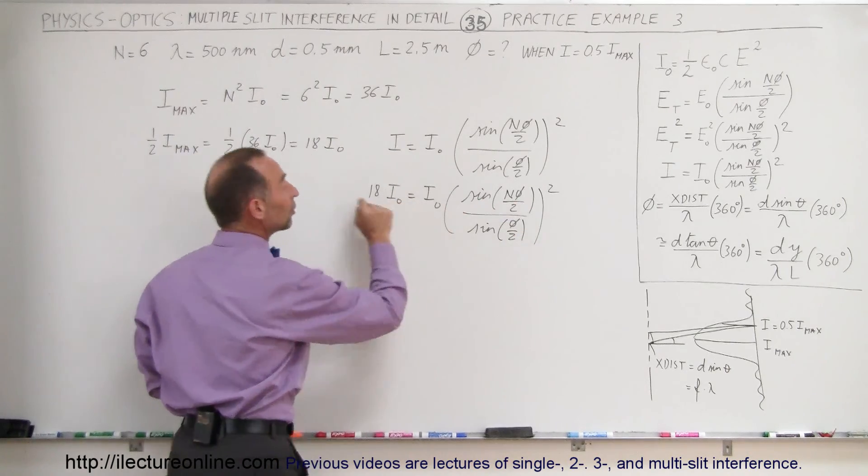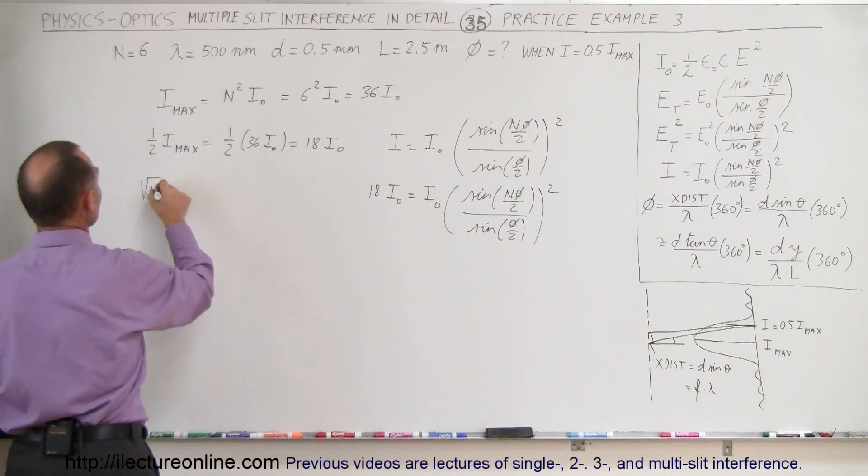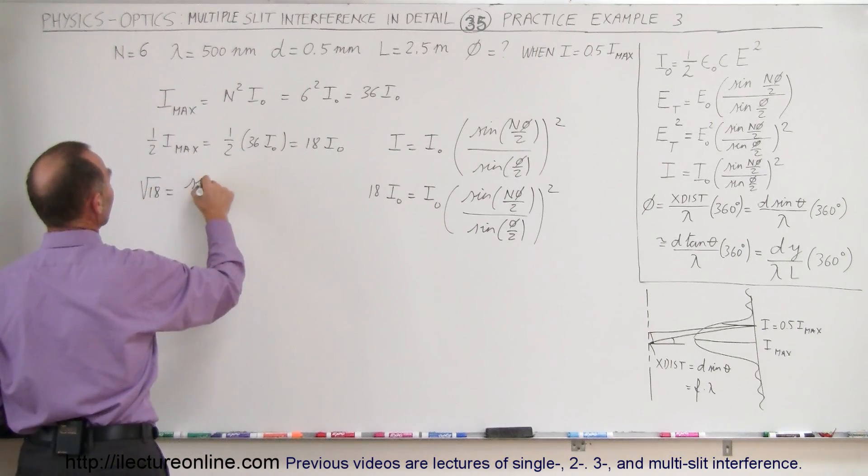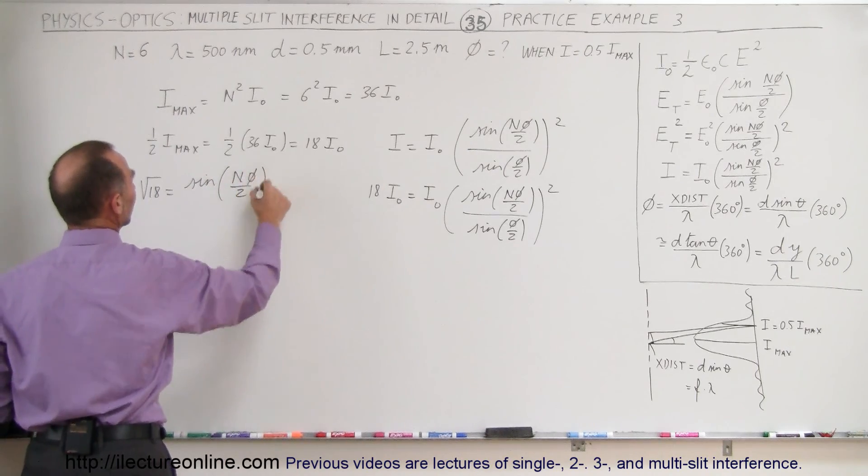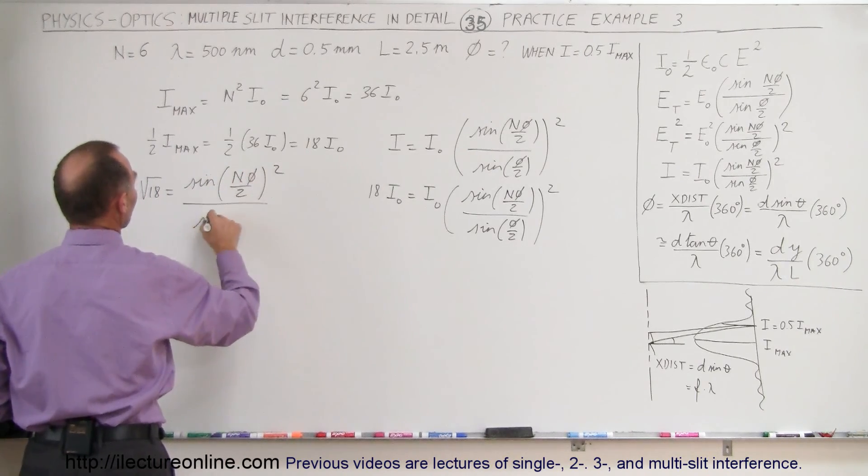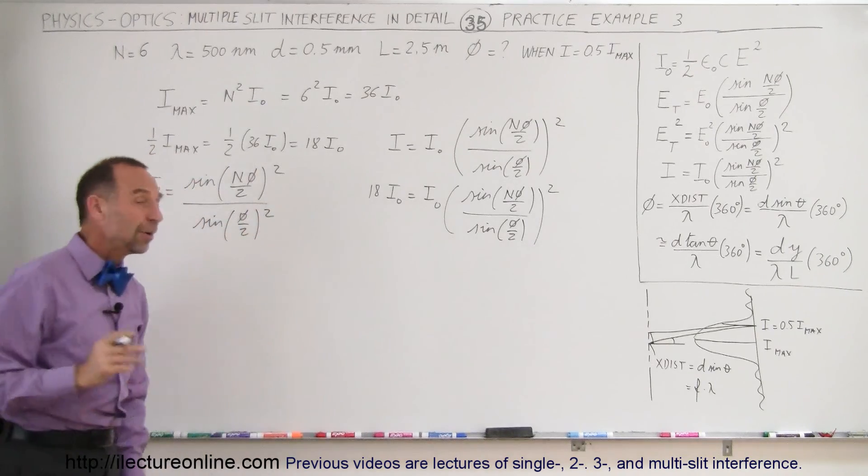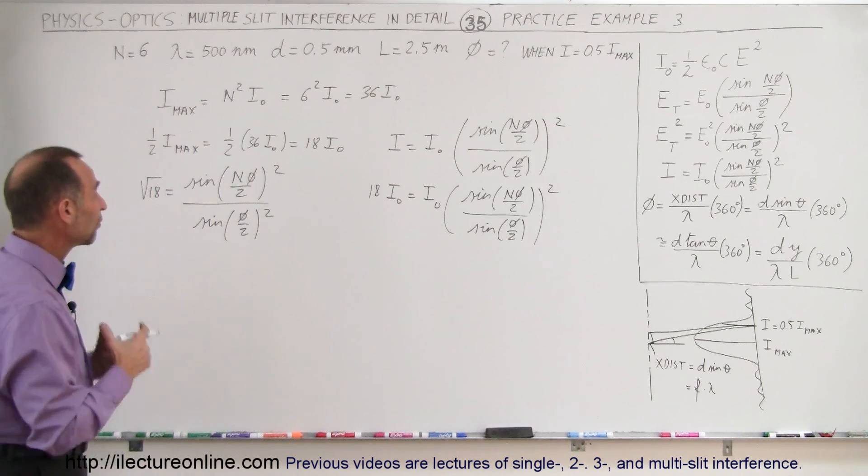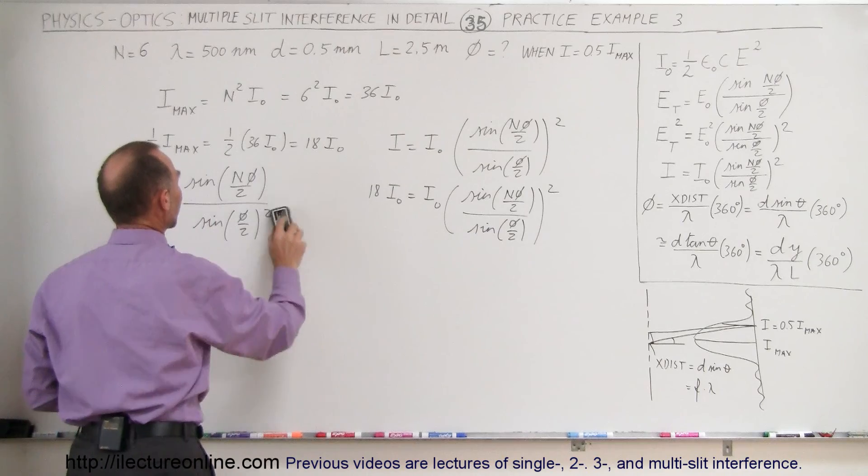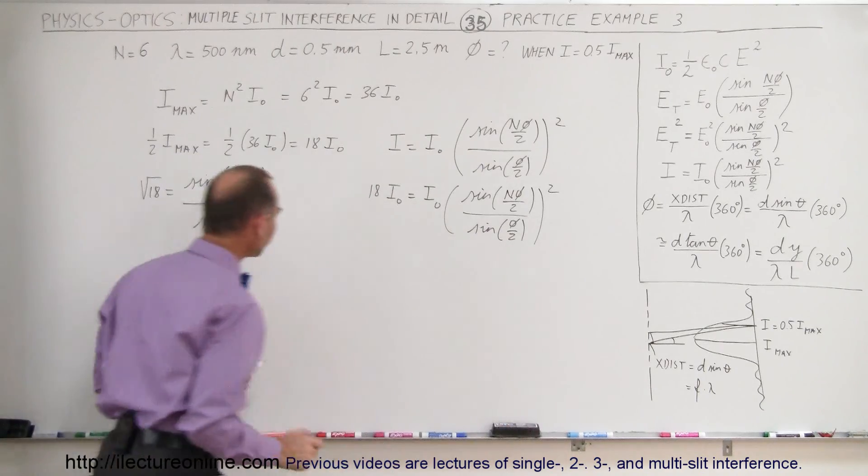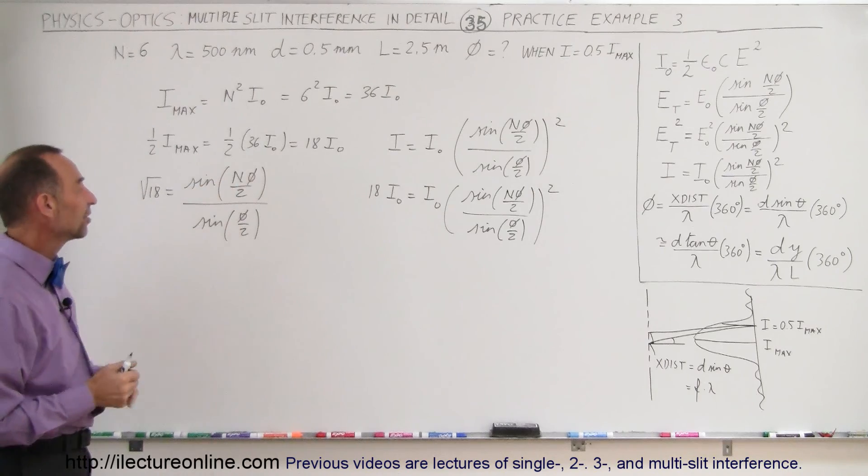This quantity is equal to this, or the square root of that is equal to the square root of 18. So the square root of 18 is equal to sine of n times the phase difference divided by 2, divided by sine of the phase difference divided by 2. The square root got rid of the square by taking the square root of both sides.